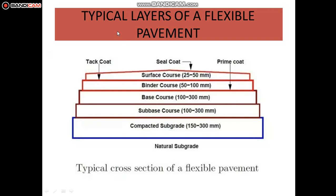Coming to the typical layers of flexible pavement, starting from natural subgrade, compacted subgrade, subbase course, base course, binder course, and surface course. Apart from that, we can see the tack coat, prime coat, and seal coat. Seal coat is seen at the topmost layer to maintain smoothness for vehicle movement. Tack coat is the layer provided above the binder course, and prime coat is the layer provided above the base course.